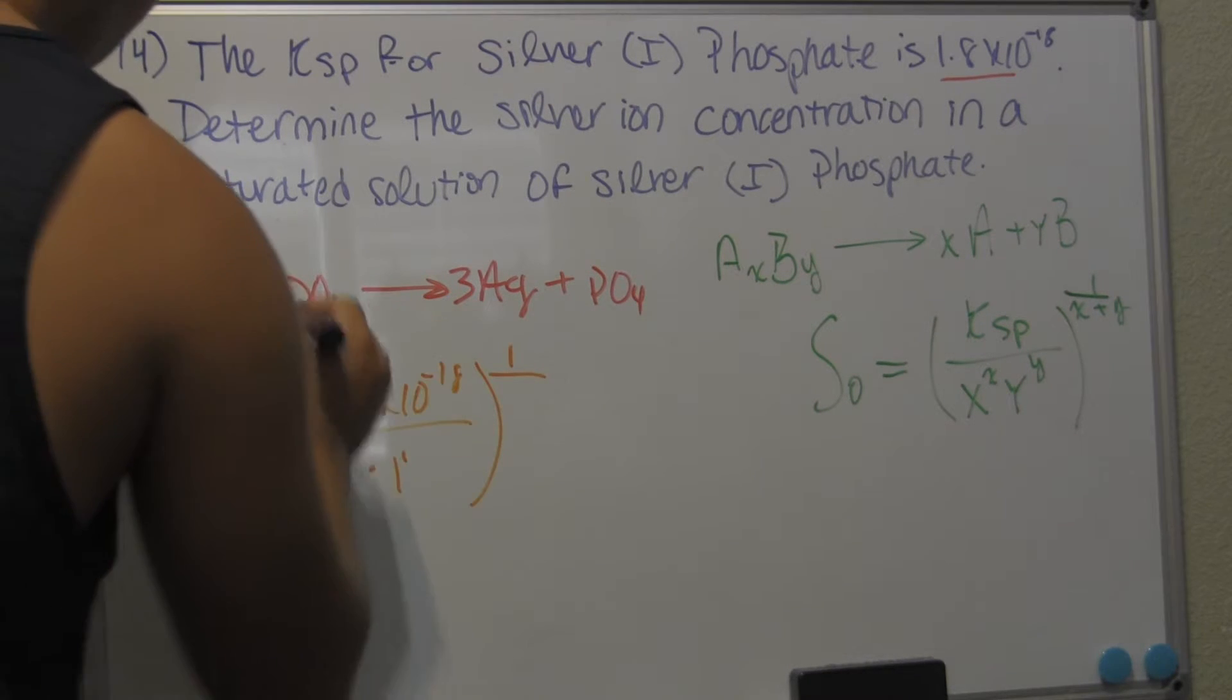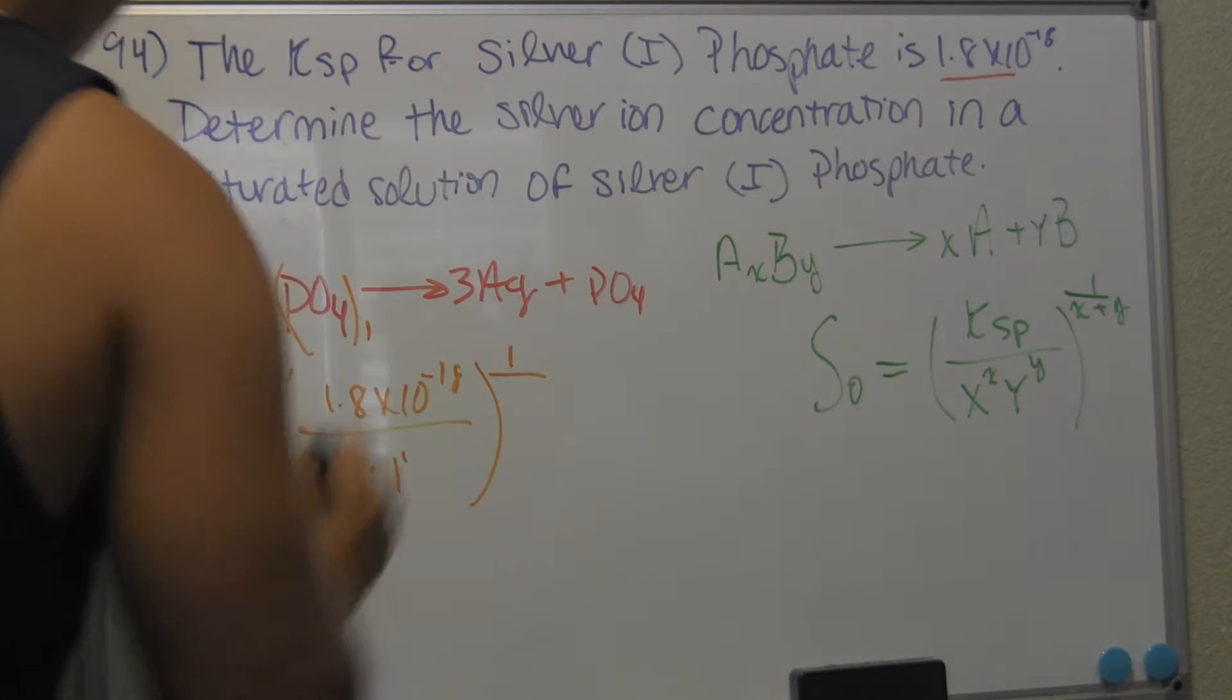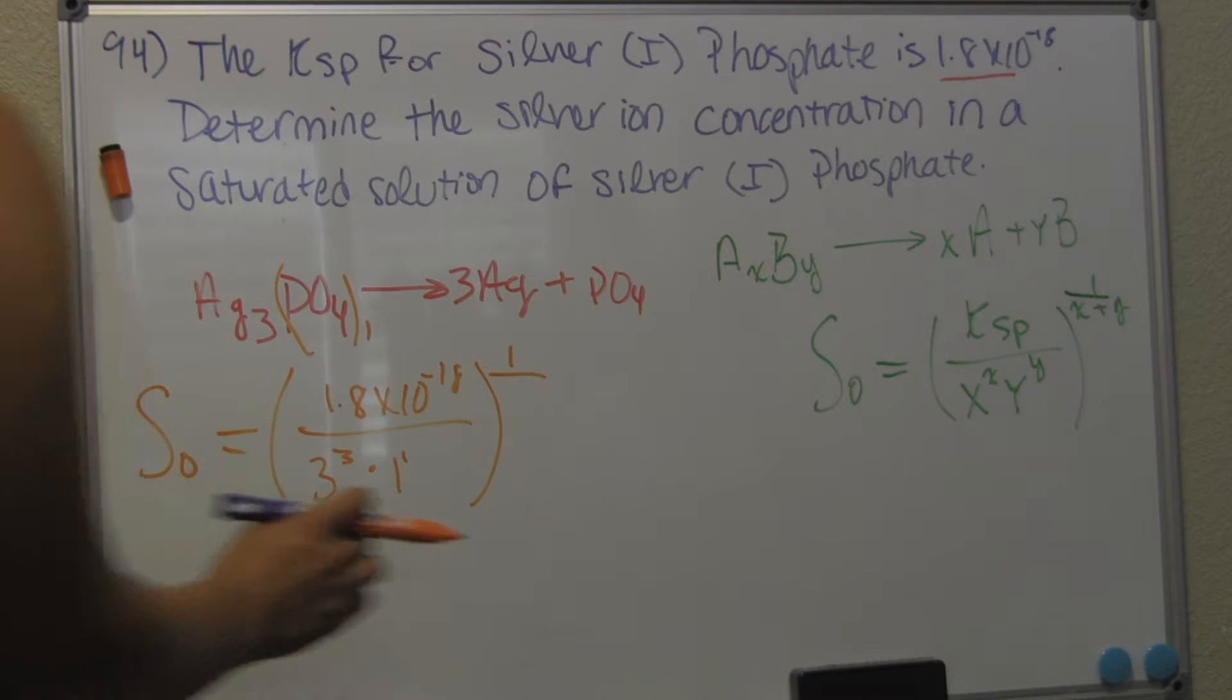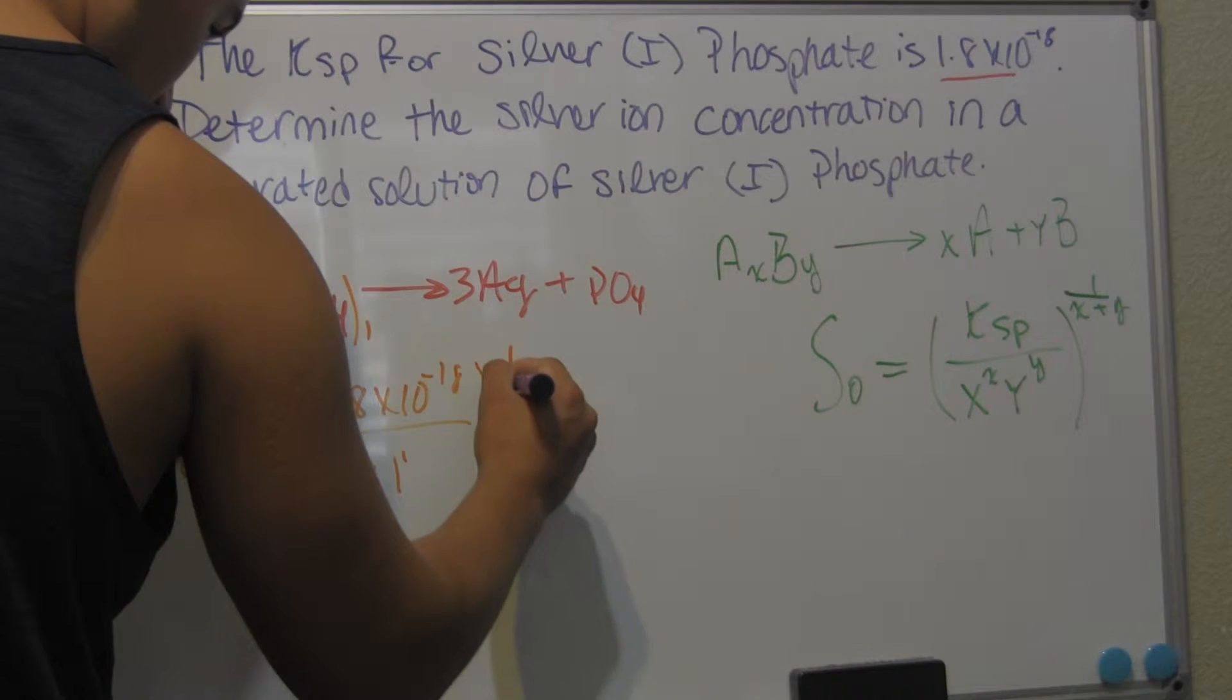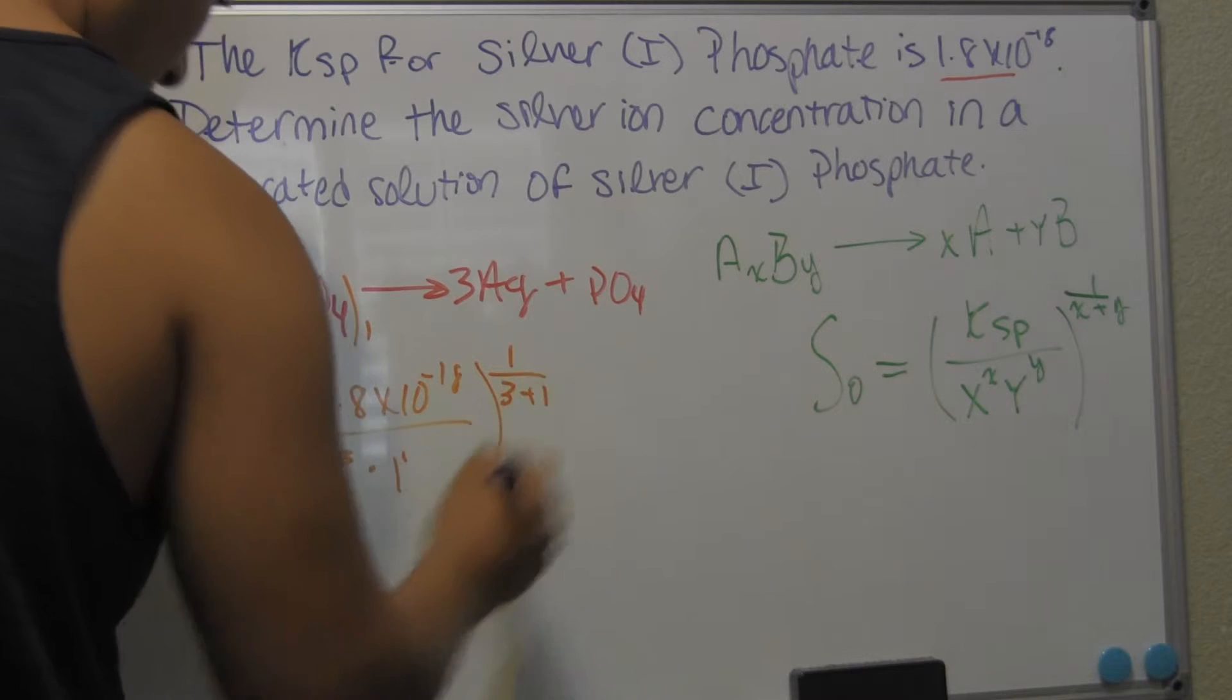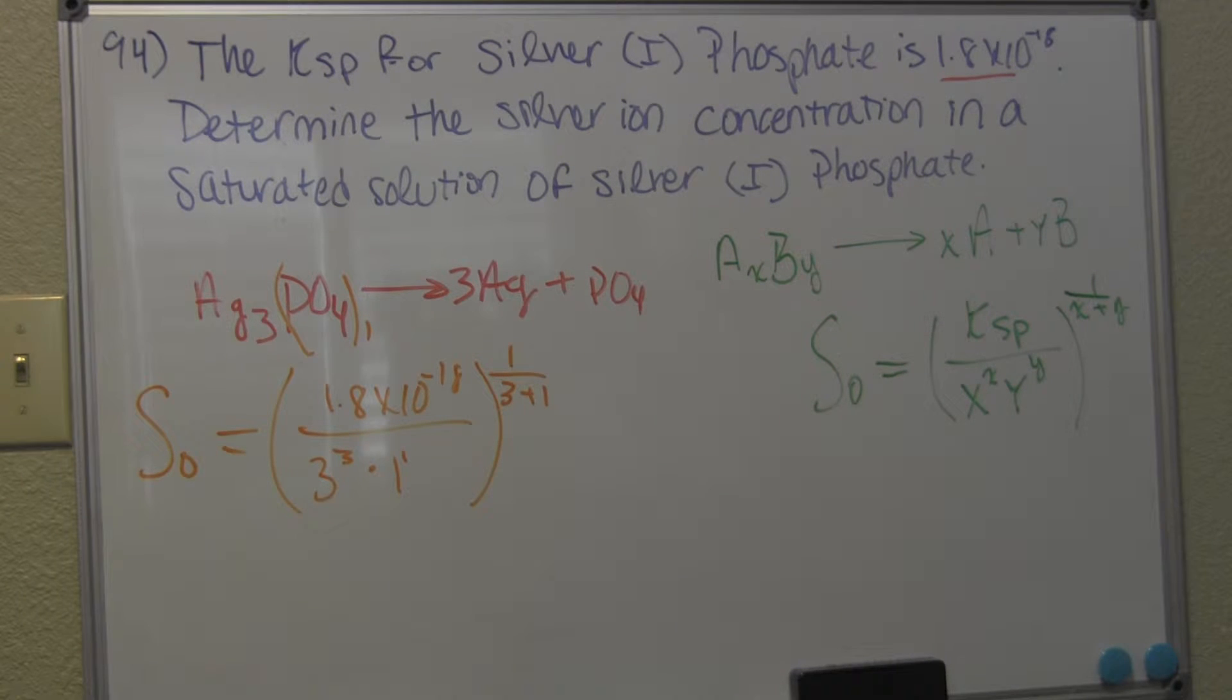And you raise that to the 1 over our subscripts over here. 3 plus 1. Just imagine there's an imaginary 1 right there. So we have 3 plus 1 over here on this side, giving us a total of 4. So let's go ahead and plug all this into our calculator. And if you want to write this down, write it down soon because I'm going to be erasing after I solve this.